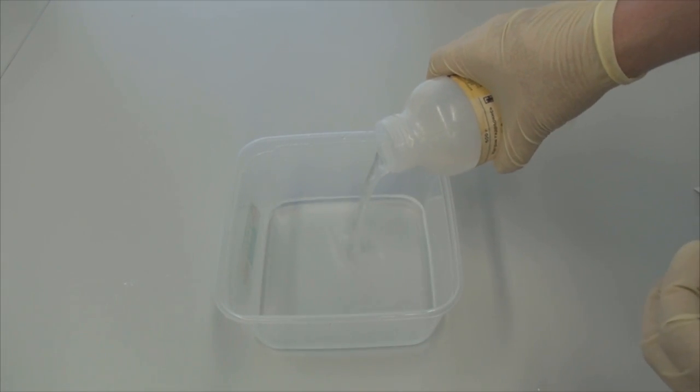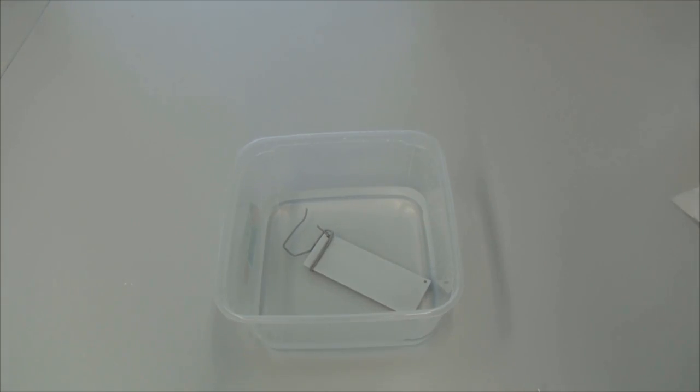Before anodizing, however, we need to remove the natural oxide layer from the metal surface. For that purpose, we dip the plate into a sodium hydroxide solution for a short time. The bubbling of hydrogen indicates that the oxide layer has been removed and that sodium hydroxide is reacting with aluminum.